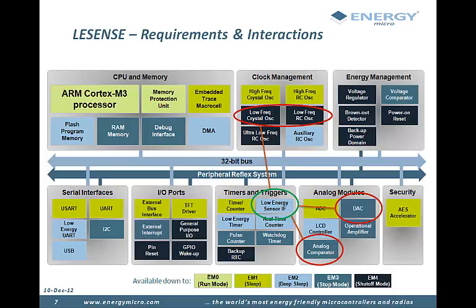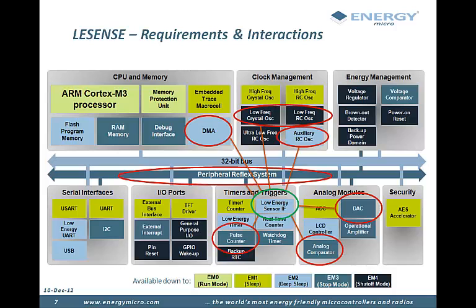In addition, LeSense can use both DMA, peripheral reflex system, pulse counter, or the auxiliary high frequency oscillator from deep sleep for more advanced tasks.